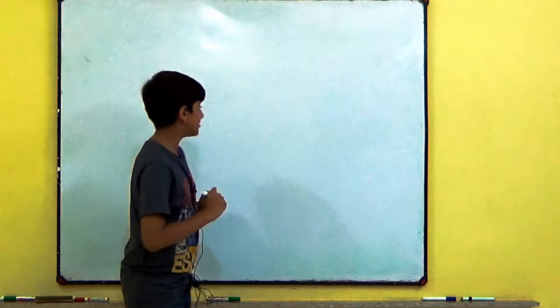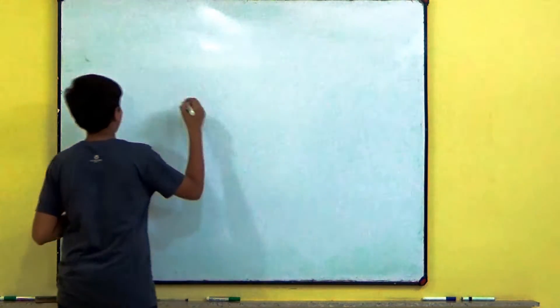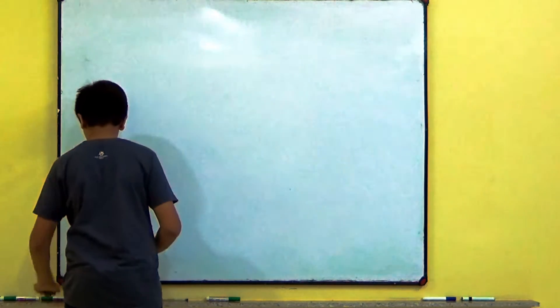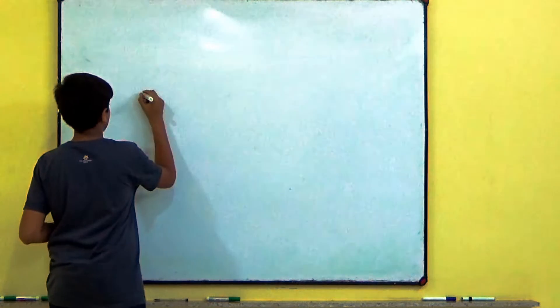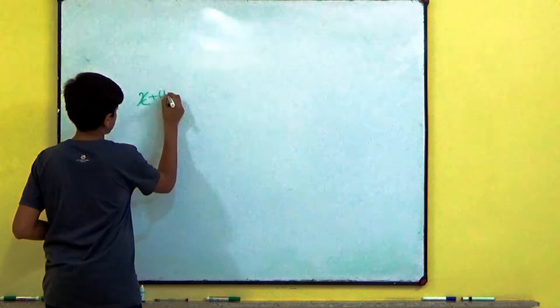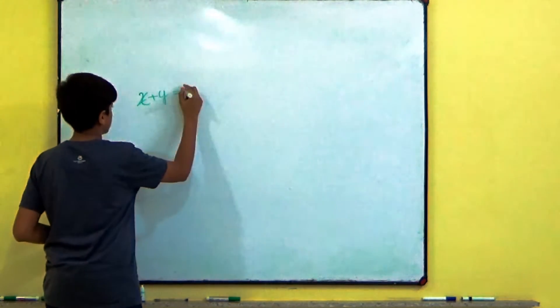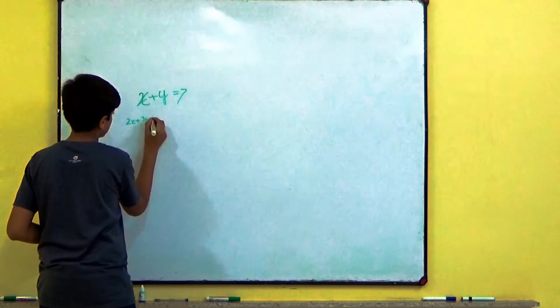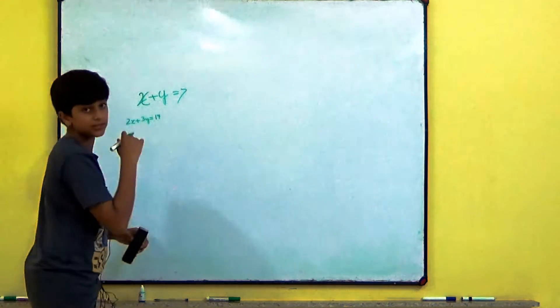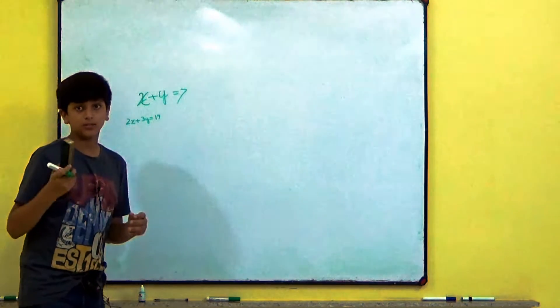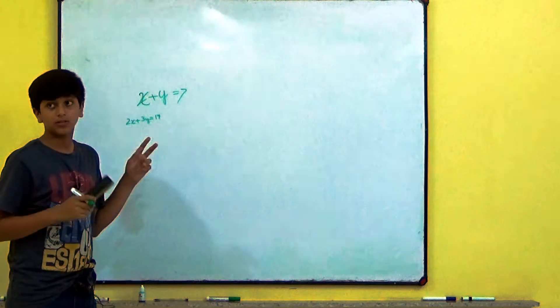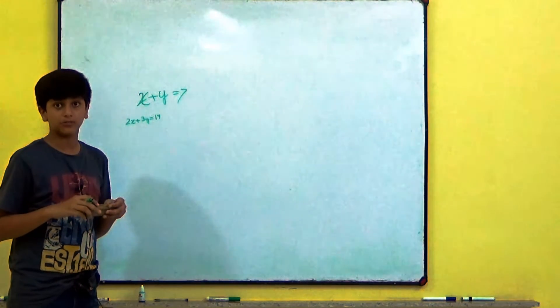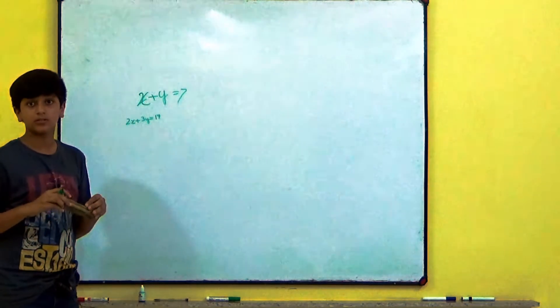So, here is a question. X plus Y is equal to 7 and 2X plus 3Y is equal to 14. So, let's take these two equations. And when we combine these two equations to form and we get the values of X and Y, it is called a simultaneous linear equations.